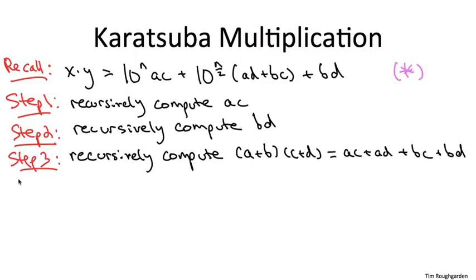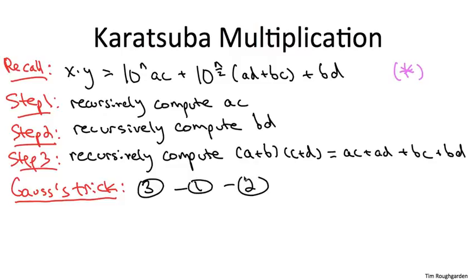Subtracting out the result of step one cancels the AC term. Subtracting out the result of step two cancels out the BD term, leaving us with exactly what we wanted all along, the middle coefficient a, d, plus b, c.